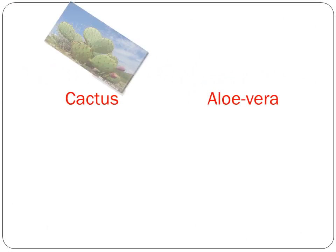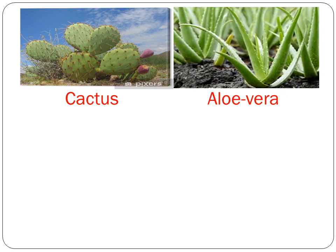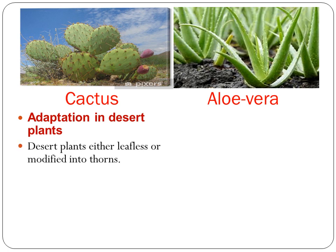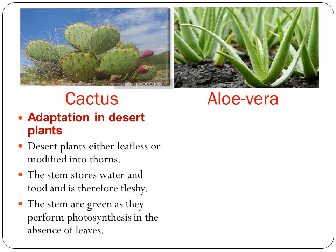Cactus and aloe vera show adaptation in the desert region. Desert plants are either leafless or their leaves are modified into thorns. The stem stores water and food and is therefore fleshy. The stems are green as they perform photosynthesis in the absence of leaves.